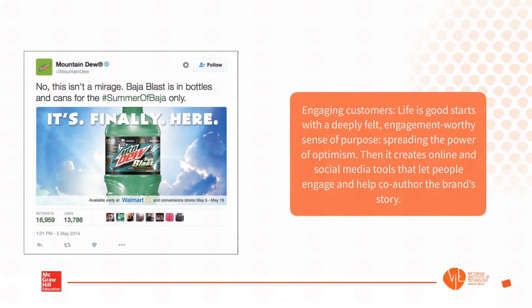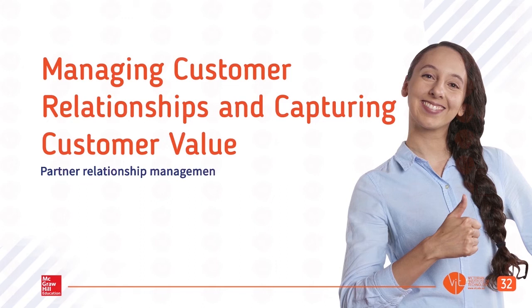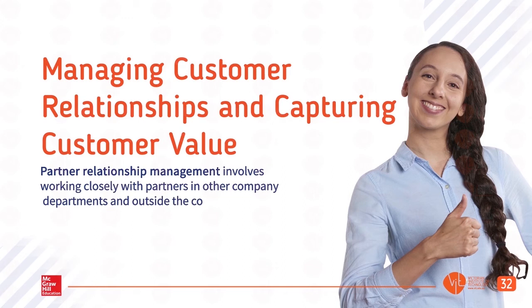Engaging customers: Life is Good starts with a deeply felt, engagement-worthy sense of purpose — spreading the power of optimism. Then it creates online and social media tools that let people engage and help co-author the brand's story. Partner relationship management involves working closely with partners in other company departments and outside the company to jointly bring greater value to customers.